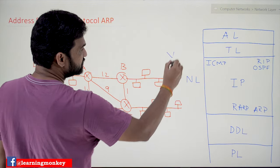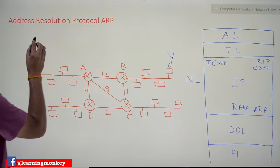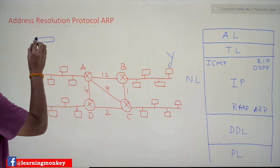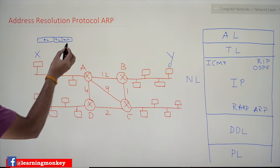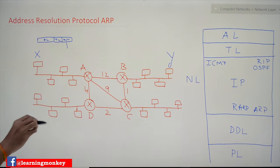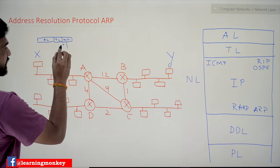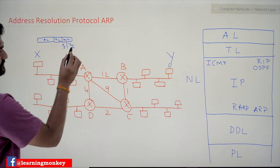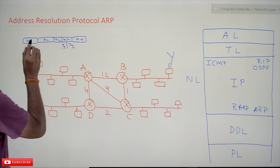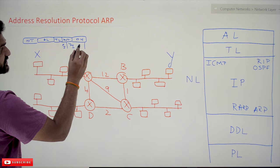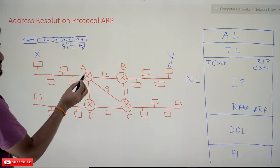For example, take system X — X wants to communicate with system Y. How will the communication happen? Whenever X is ready to transmit, it will get the data from the application layer. The transport layer header will be added, then the network layer header gets added. Within this network layer header we have two important fields: the source IP address (X's IP) and the destination IP address (Y's IP). Then the data link layer header and tail are added.